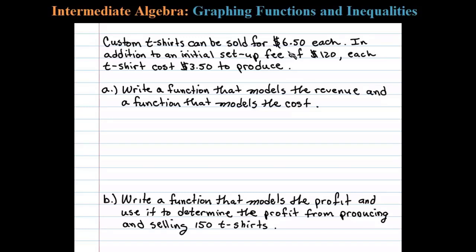Custom t-shirts can be sold for $6.50 each. In addition to an initial setup fee of $120, each t-shirt costs $3.50 to produce. Write a function that models the revenue and a function that models the cost.